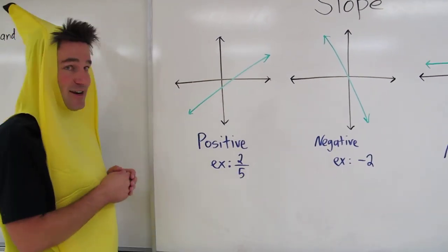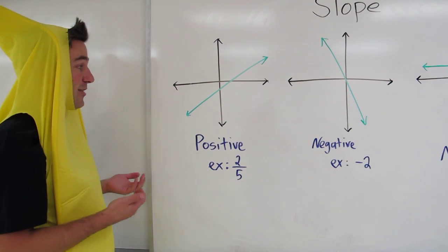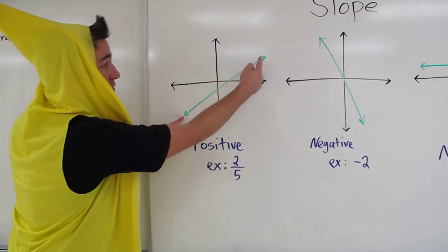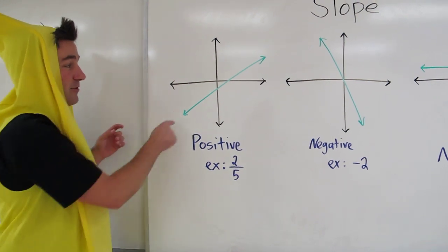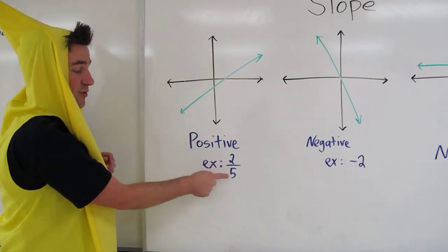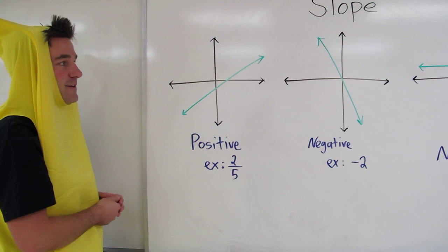This green line right here has a positive slope. We know that because if we look at it from left to right, we see it's increasing. So for example, this slope might be 2 fifths, positive 2 fifths.